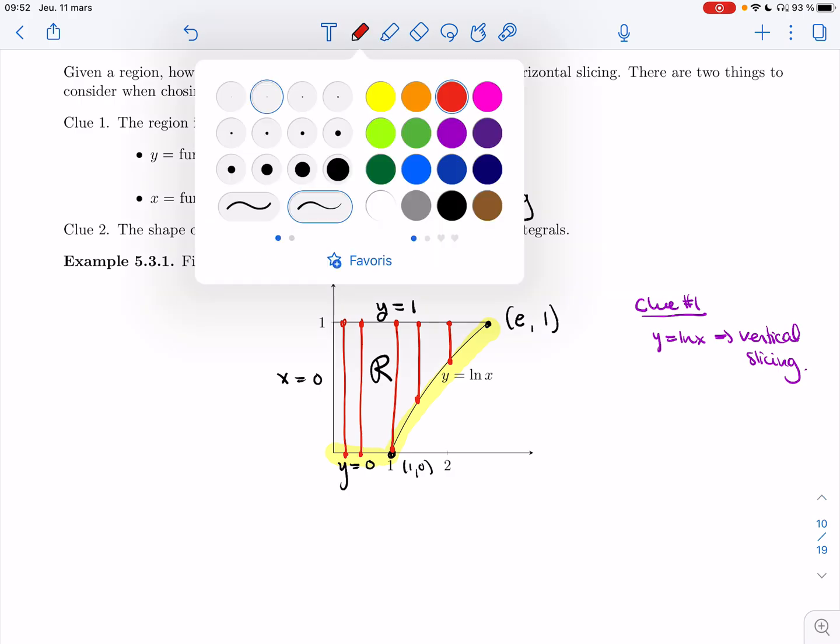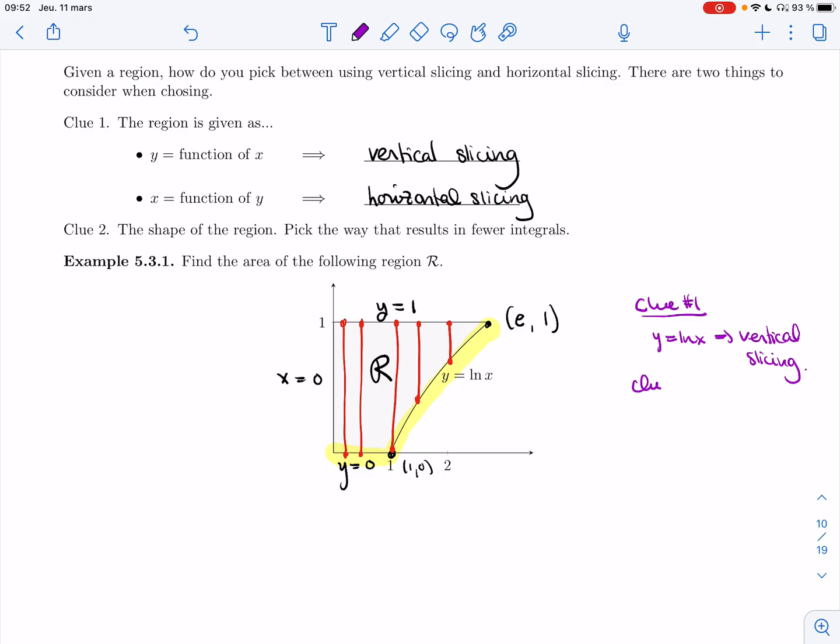So if I look at clue number two as well, if I use vertical slicing, I would need two integrals, one for the part right here, and then I'd have to switch because bottom now follows the y equals ln of x curve.